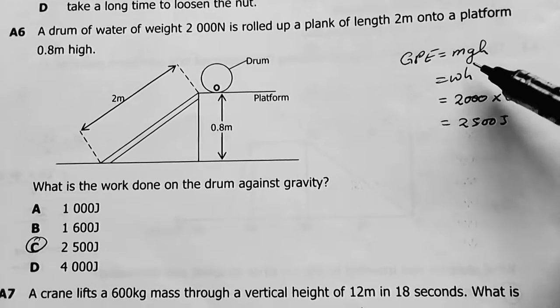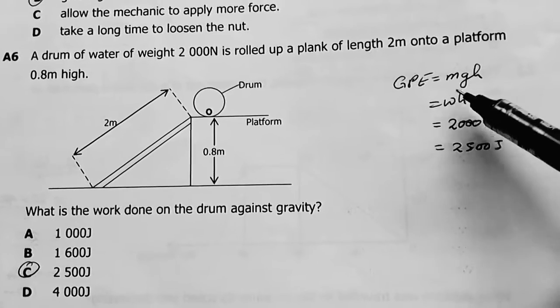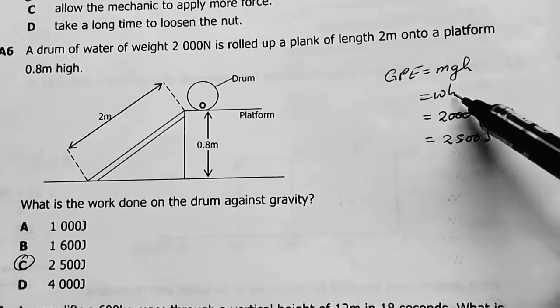The amount of work done is equal to the amount of energy expended. Therefore, I just calculate for my gravitational potential energy to be equal to the amount of work done. So GPE equals mgh. The weight is mg, so 2000 times 0.8 gives us 2500 joules. The answer is C.